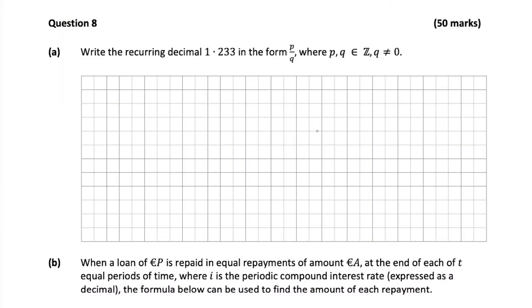We're looking at the 2021 maths mock paper 1, and question 8 is asking us to write the recurring decimal 1.2̄3̄ in the form p over q. So what we first want to do is separate it out.